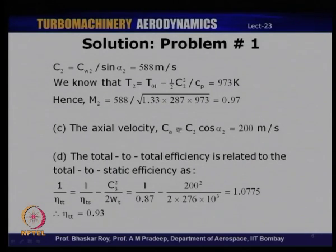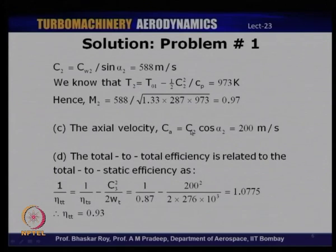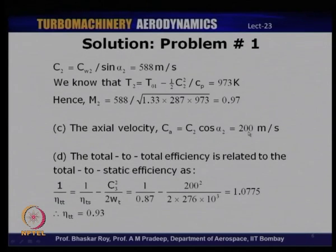For part (c), the axial velocity: since C2 and alpha2 are known, Ca = C2 × cos(alpha2) = 588 × cos(70°) = 200 m/s.